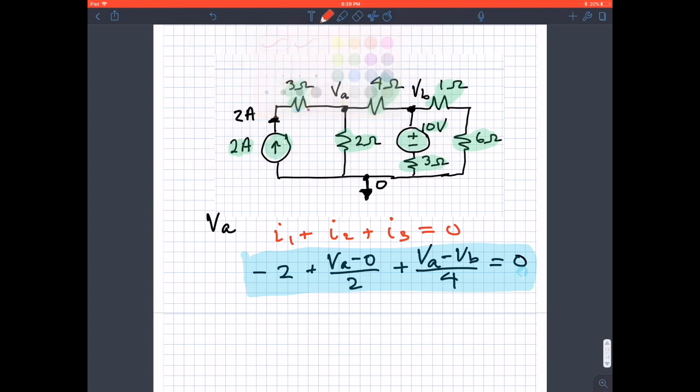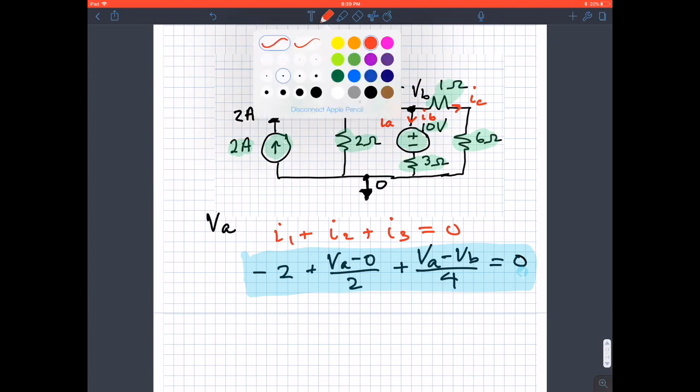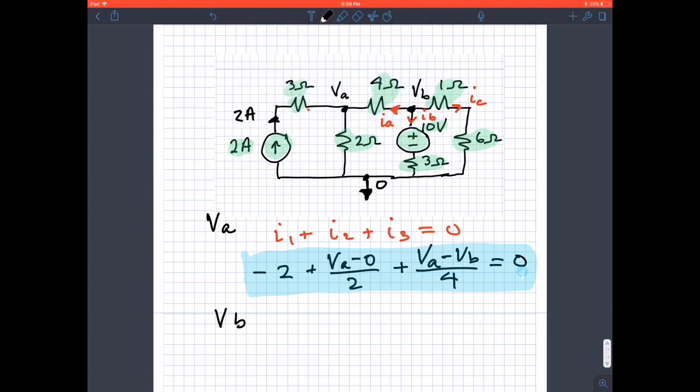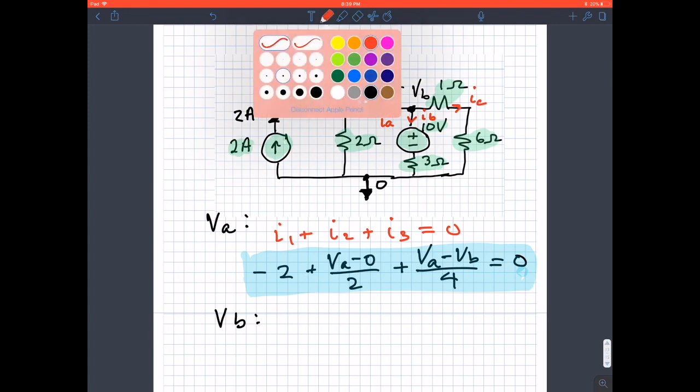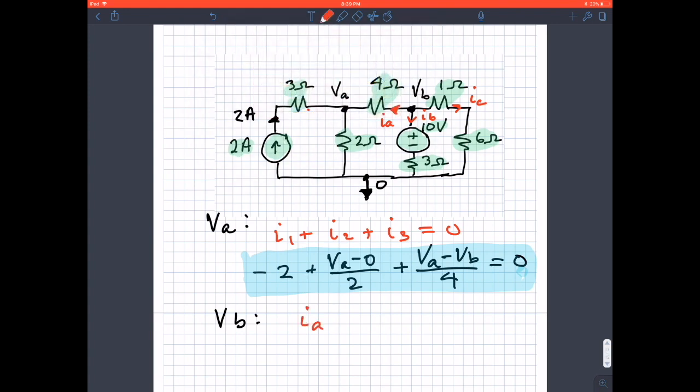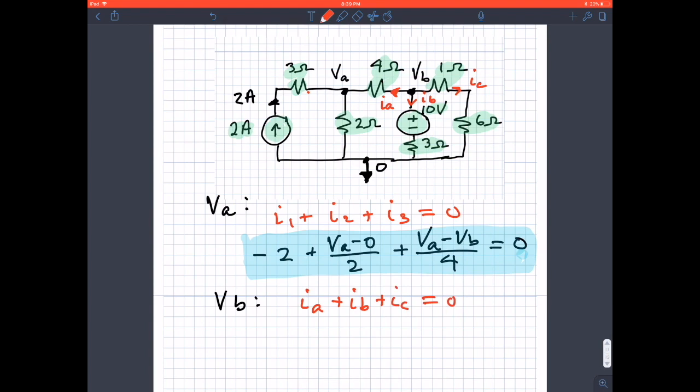From here, I'm going to have three currents coming out of node VB. I'm going to call that IA, IB, and IC. What we know for node VB is that the currents IA plus IB plus IC equals zero. Now it's just a matter of finding what those currents would be.